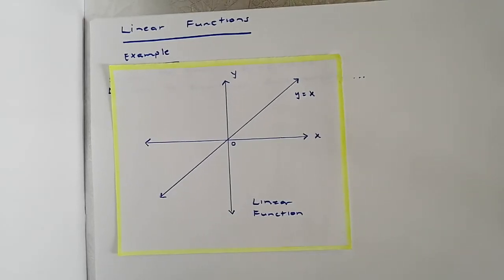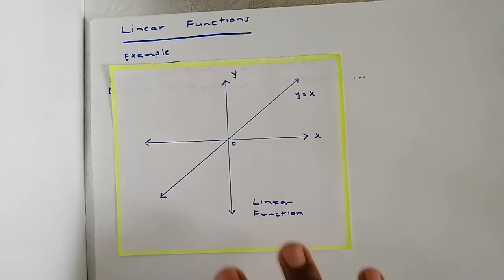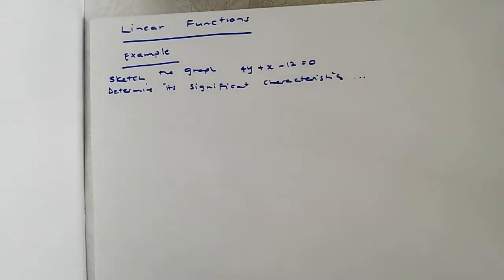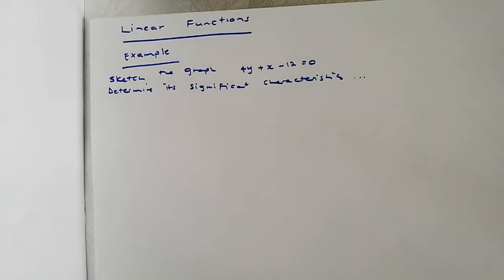Hello guys, welcome back to Academic Coordinates. In this video we are doing an example — it's actually a follow-up from the previous video where we defined linear functions. In this video we're going to do an example: we'll sketch a graph and determine some of its significant characteristics, being the domain, the range, and where the function is increasing or decreasing.